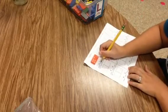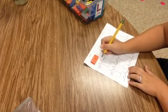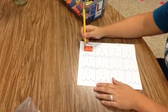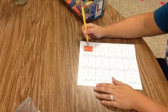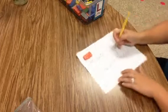So we've got part, part, and we're looking for our whole. So 1, 2, 3, 4, 5, 6, 7. So 7 is our whole.